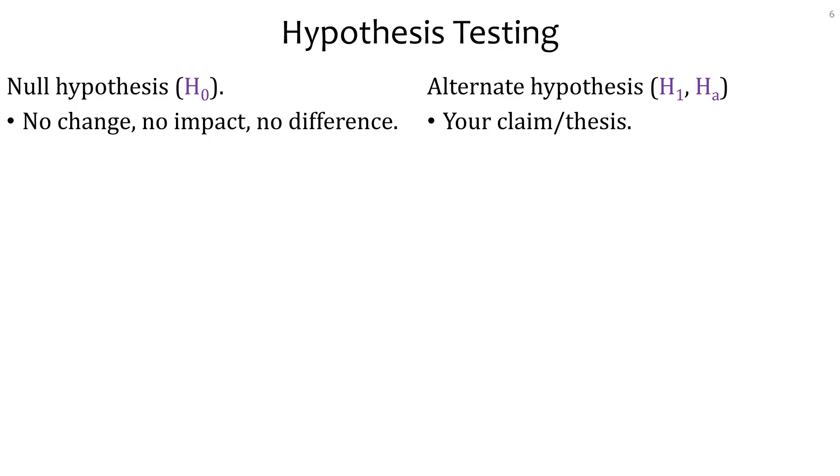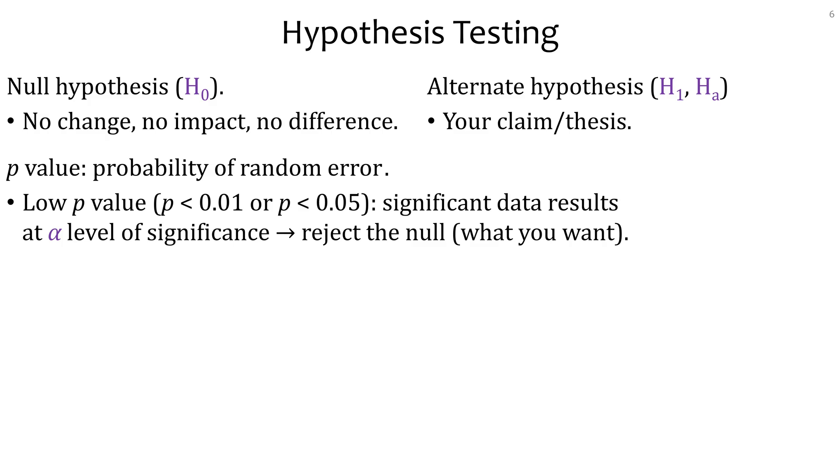The way you would tell what is the test result is based on this p-value, which is the probability of random error. The p-value tells us how likely is it that all observations are random error. So if you get a low p-value, let's say less than 0.01 or 0.05, you can also express these as percentages, 1% or 5%, then that means significant data result. This word is very important. Whenever you see significant in your articles, pay attention because that might be what you're looking for. Significant is exactly the same as reject the null. So if you see that in your articles, you can equate them. That might be a very good way of finding what you want.